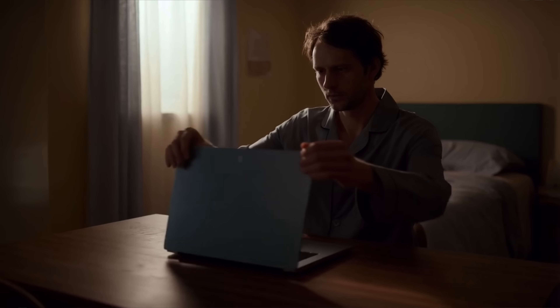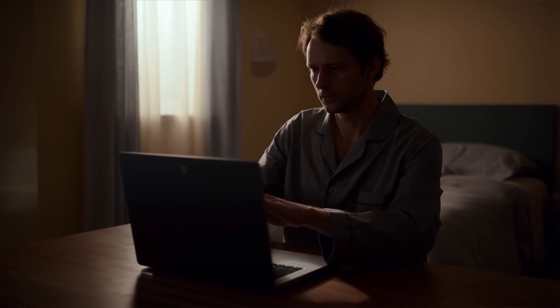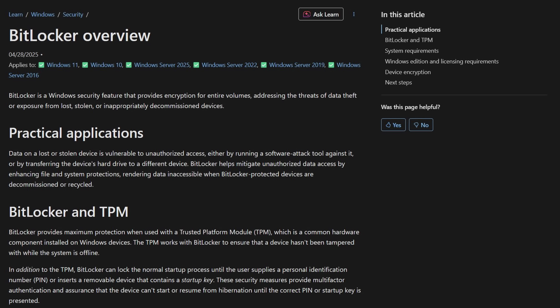Imagine you wake up one morning, go to turn your computer on, and you're suddenly met with this screen and you have no idea what it is or what to do. Unfortunately, it happens to a lot of people. It's called BitLocker and it's supposed to be there to protect the data on your computer. But if you don't even know you have it, how in the world are you supposed to get around it? That's what we're going to talk about today.